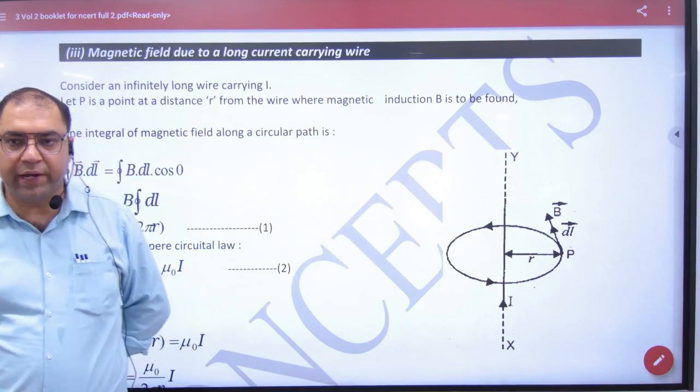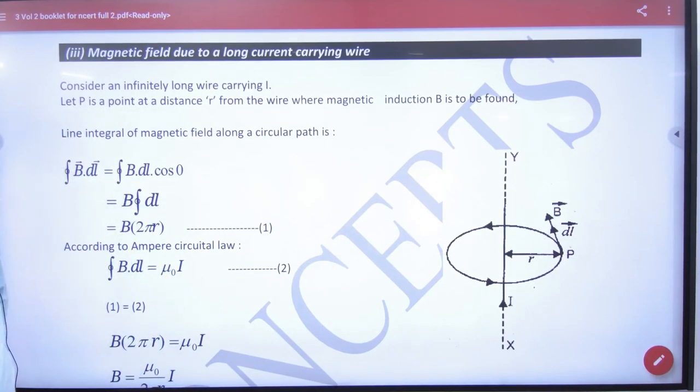And what will be total integration length? dL, dL, dL will be able to get total 2πr. So what will be ∮B⋅dL? It will be B into 2πr.